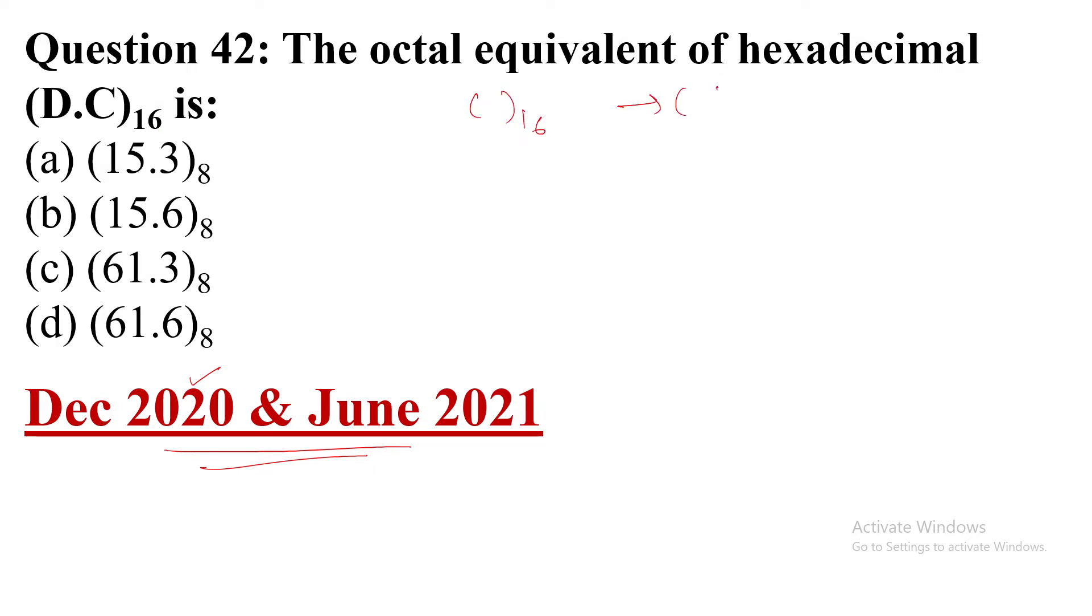First, convert hexadecimal to binary, and then we will convert to the octal number system. Why? Because it is the easiest pattern. 16 and 2 power notation is the same - 2 power 4 equals 16. That is why.